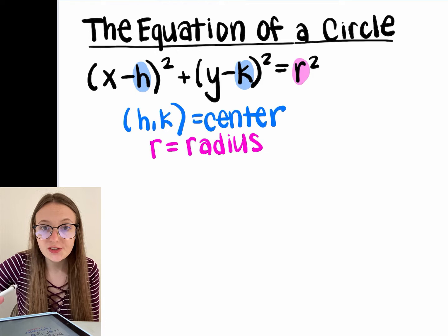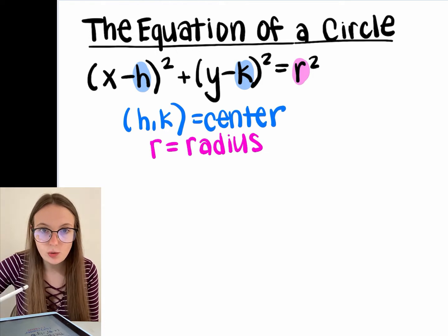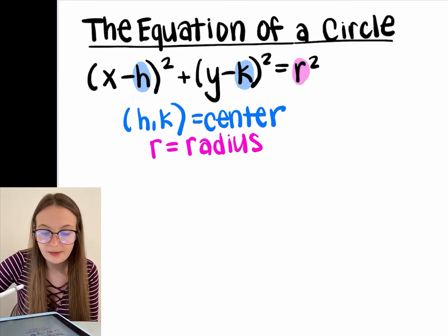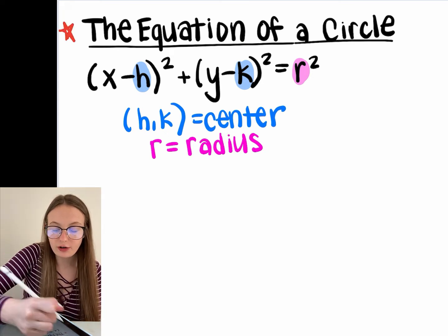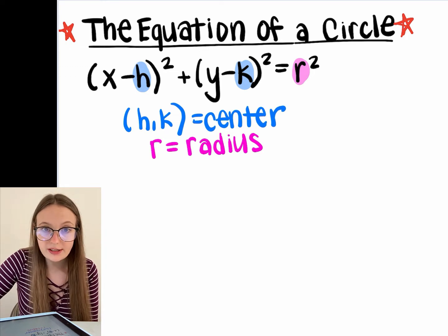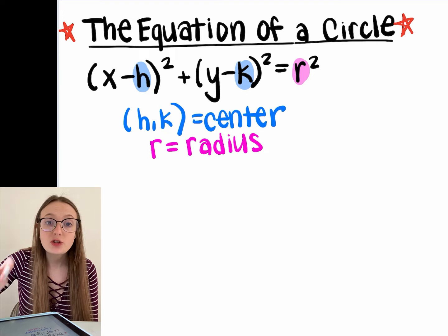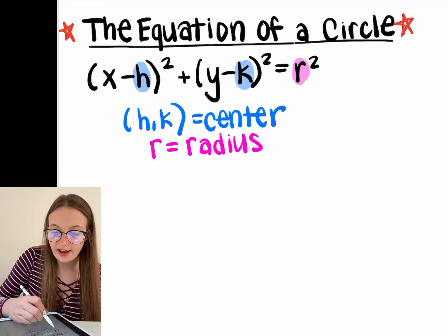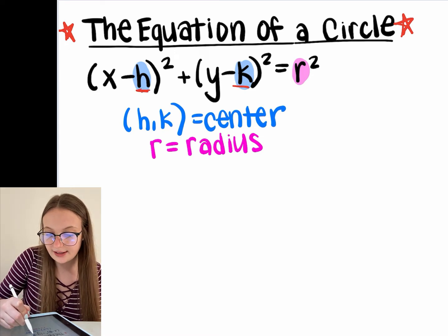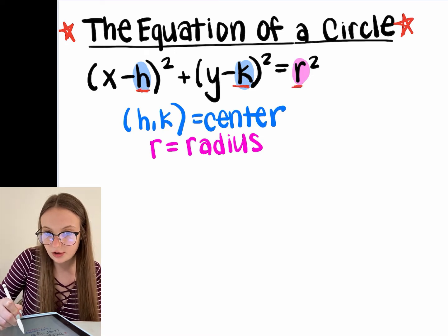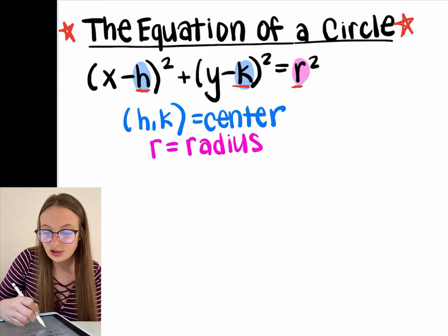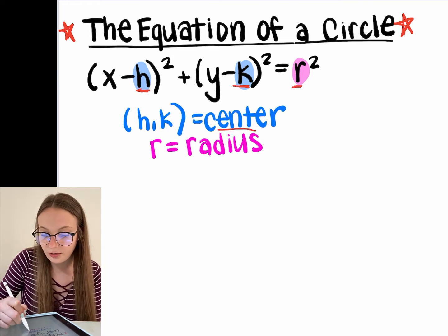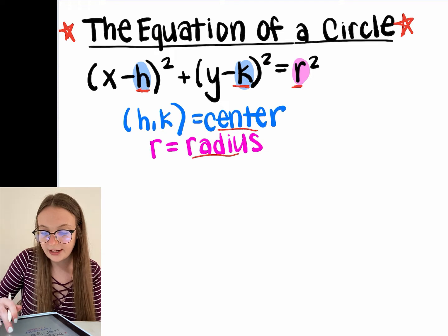Before we can really understand what it means to complete the square, we first have to understand the equation of a circle. This will not be provided in the formula section of the SAT or ACT, so you need to have it memorized 100%. The formula is: x minus h squared plus y minus k squared equals r squared, where h comma k represents the center of the circle and r represents the radius.